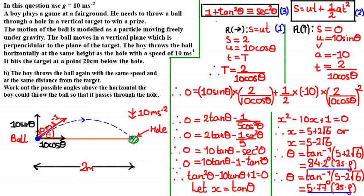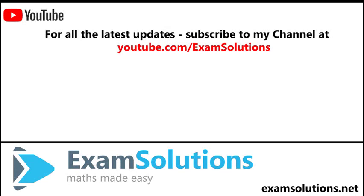Since we solved a trigonometric equation with several possible solutions, it's always worth checking validity. By looking at the diagram and the path of motion, the angle should be between 0° and 90°, and both our answers satisfy this. So the possible angles above the horizontal are 84.2° and 5.77°. I hope that was useful — keep up the good work and I'll see you in the next tutorial!